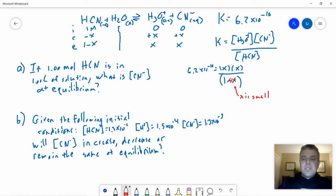So then 6.2 times 10 to the negative 10th equals X squared over 1. So X equals, if we solve this, it's just going to be the square root of 6.2 times 10 to the negative 10th, which is 2.5 times 10 to the negative 5th. So that happens to be X, which is our CN value. So it's 2.5 times 10 to the negative 5th molar.